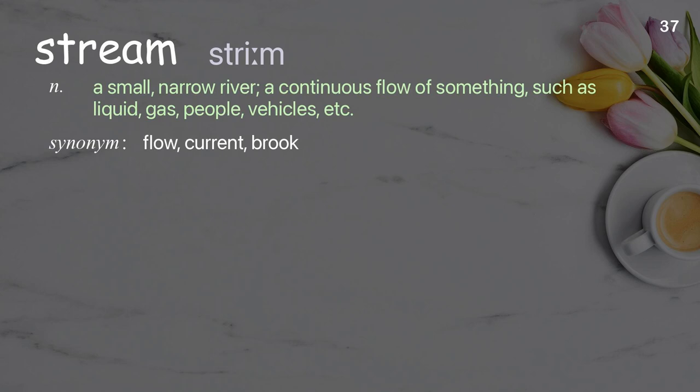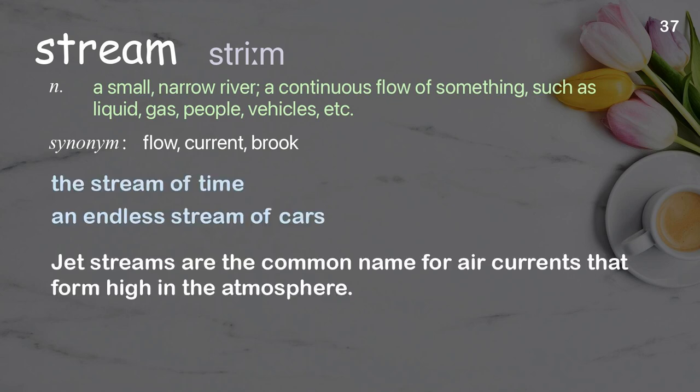Stream: A small, narrow river; a continuous flow of something, such as liquid, gas, people, or vehicles. Examples: The stream of time. An endless stream of cars. Jet streams are the common name for air currents that form high in the atmosphere.